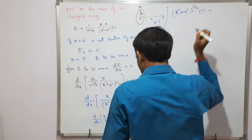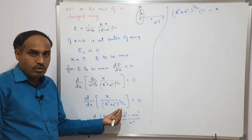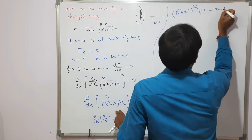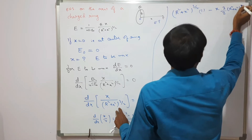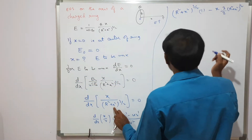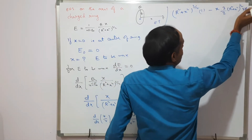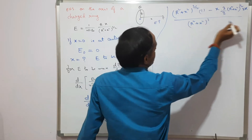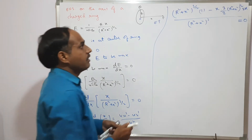For u·v′, using the chain rule — d/dx of [f(x)]^n = n·[f(x)]^(n−1)·f′(x) — we get x times (3/2)(r² + x²)^(1/2) times 2x, since the derivative of r² + x² is 2x (r is constant). The denominator is (r² + x²)³. Setting the whole expression equal to zero.